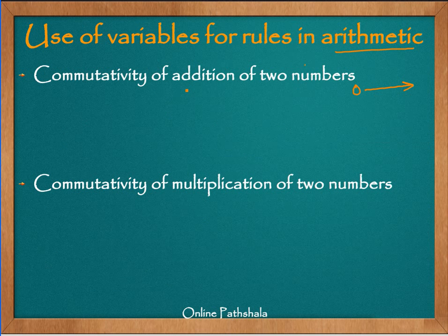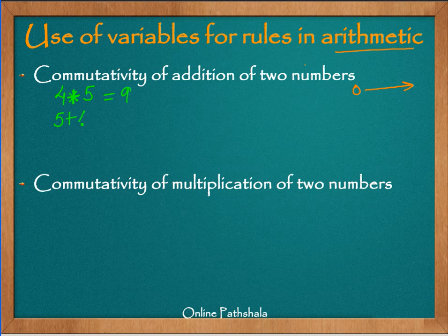Commutativity simply means what happens when we interchange the numbers. Let us take 4 added to 5 — this gives me 9. Now if I change the order, 5 plus 4, I still get 9. Can we use variables to represent this commutative property?